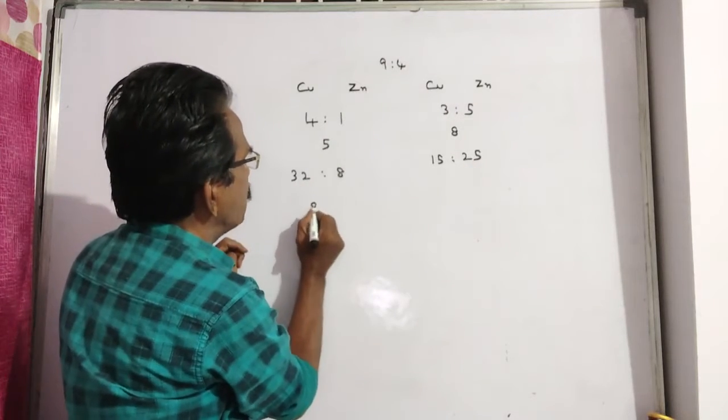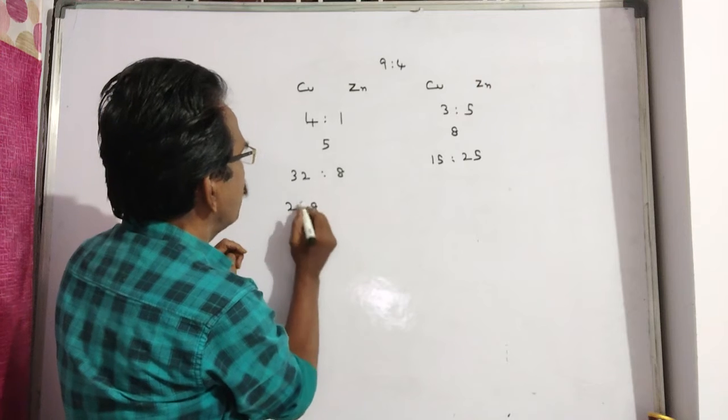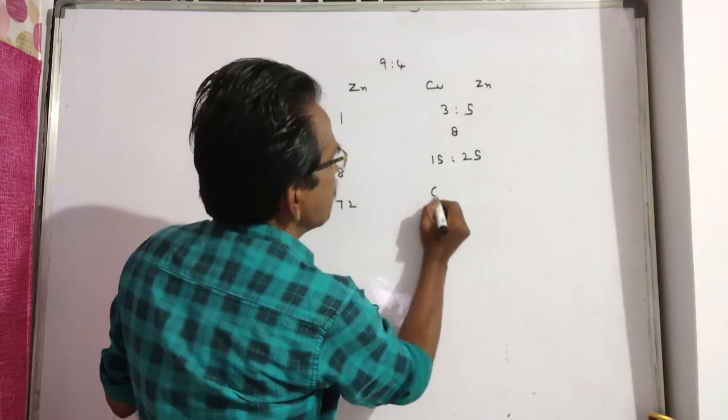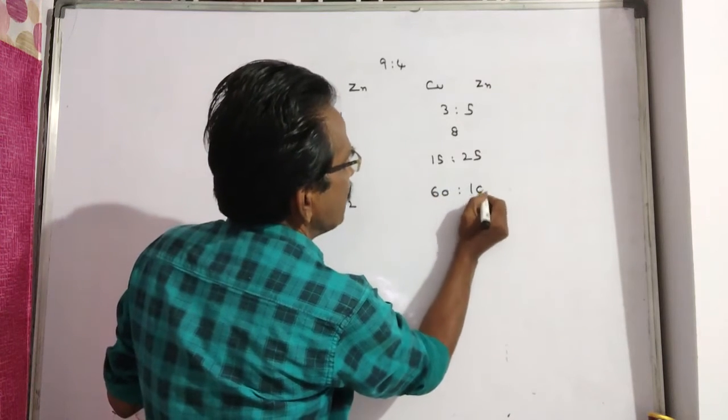9 times 32: 9 times 2 is 18, 9 times 3 is 27, 28, giving 288. 9 times 8 is 72. 4 times 15 is 60. 4 times 25 is 100.